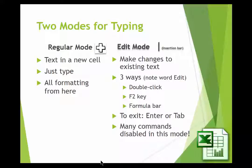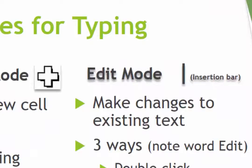In edit mode, you can make changes to the text. There are three ways to get into edit mode: one is to double-click; another is to press the F2 key, which is really handy; and the third way is up on the formula bar — you can click up there and type. To get out, you can press Enter, Tab, or the Escape key. Be aware that if you're in edit mode, many of the commands are disabled. So if you can't make them work, the first thing to check is whether you have the insertion bar or the hollow cross.